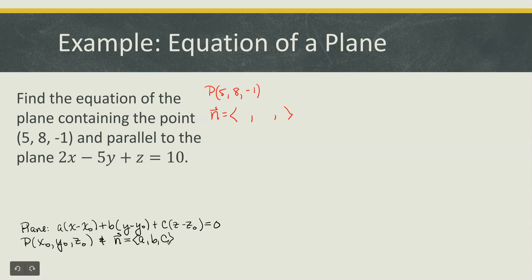So what I want to do is think about what would it mean for two planes to be parallel. Let's say this is the existing plane, 2x minus 5y plus z equals 0. Well it has a normal vector.